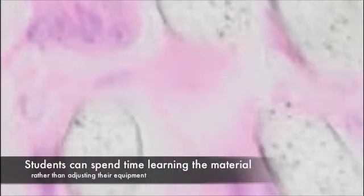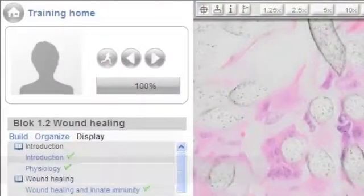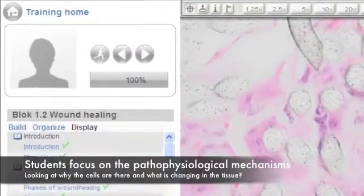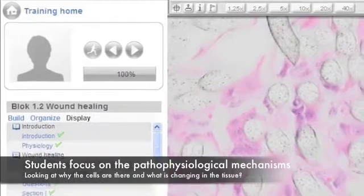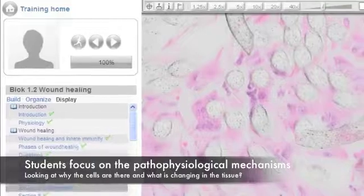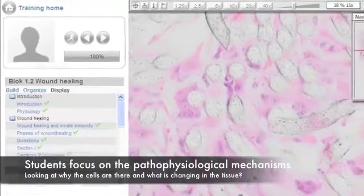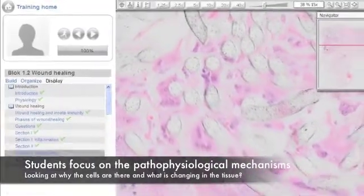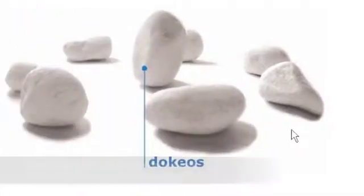What's the most important thing? It's not adjusting the microscope, but it's recognizing what's there. But also much more than that, not only seeing a picture and recognizing it, but also the part of physiological mechanisms behind it. Why are those cells there and what is changing within the tissue? So it's much more than only looking at a nice picture and recognizing whether it's a Ferrari or a VW or something like that. The background information is obviously very important as well.